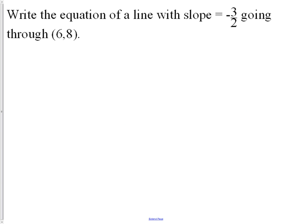Let's try and use this. We want to write the equation of a line with the slope of negative three-halves going through the point (6, -8). We have to decide which of our three forms we're going to use — standard, point-slope, or slope-intercept. Since I'm given a point and a slope, I'm going to use point-slope: y minus y1 equals m times (x minus x1).